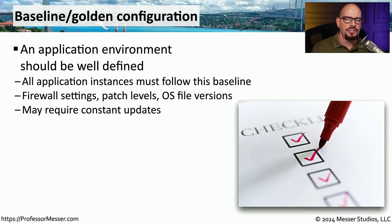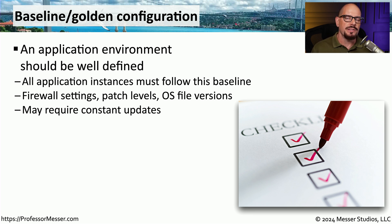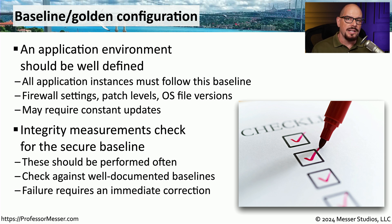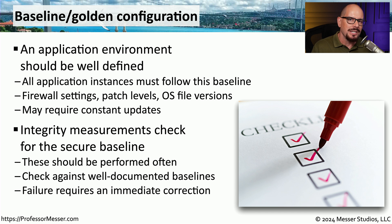When deploying a new application, it's usually more than a single server and a single executable. There are usually many different components that allow that application to operate — including configurations on the user's workstations, changes to the firewall, and the application server itself. To truly understand the scope of this application, we need to document every aspect of the installation. This allows us to create a golden configuration that certifies the application will work properly if all of these configurations are in place. We can also use that golden configuration to verify we are using the proper software and correct configurations, and create integrity checks that compare production with our baseline or golden config.